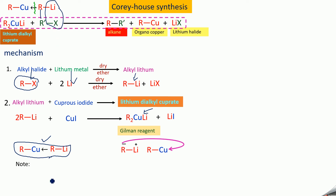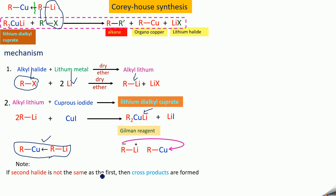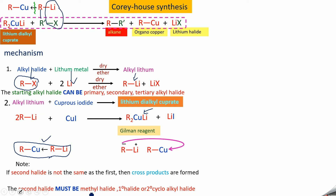Some very important notes: the second halide used in Corey-House synthesis must not be the same as the first one, otherwise cross products are formed. The starting alkyl halide can be primary, secondary, or tertiary. But the second alkyl halide must be a methyl halide, primary alkyl halide, secondary cycloalkyl halide, or benzene halide — because it follows an SN2 mechanism.